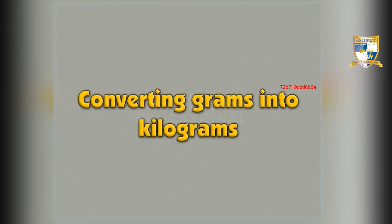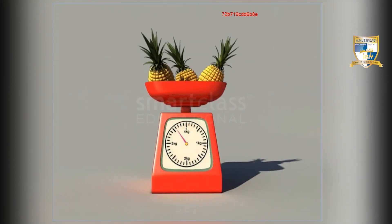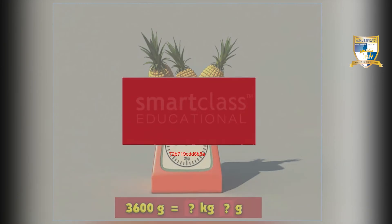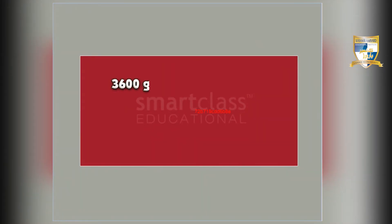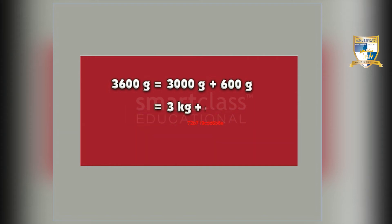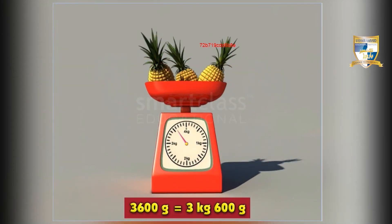Next we will see how mass in grams is converted to mass in kilograms. The mass of this bunch of pineapples is 3600 grams. What is its mass in kilograms and grams? First, split 3600 grams into 3000 grams and 600 grams. 3000 grams equals 3 kg. So you get 3 kg plus 600 grams, which is 3 kg 600 grams. Thus the mass of the pineapples in kilograms and grams is 3 kg 600 grams.